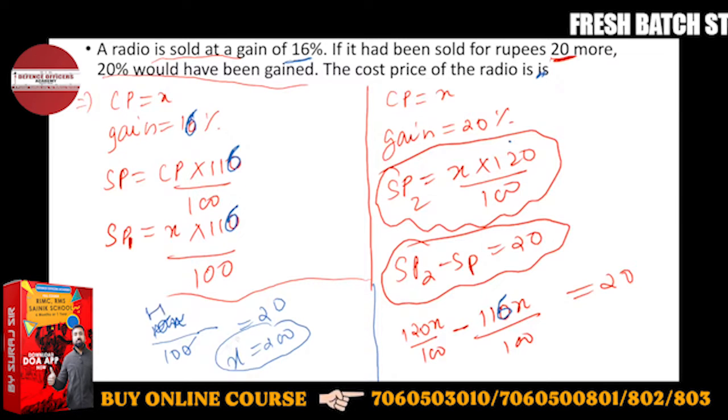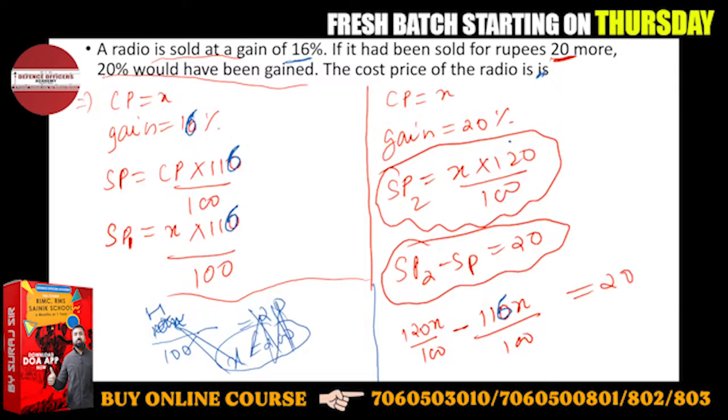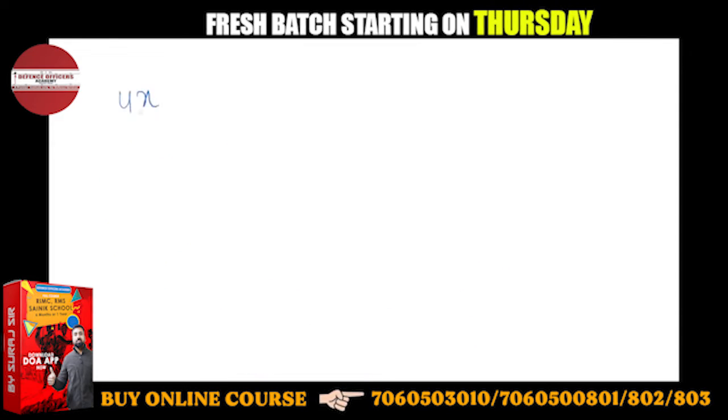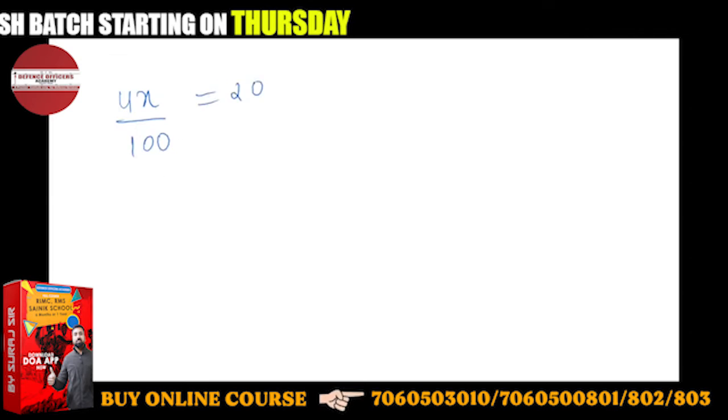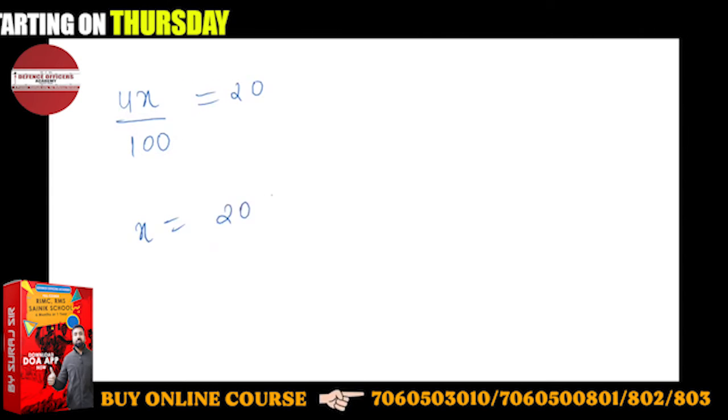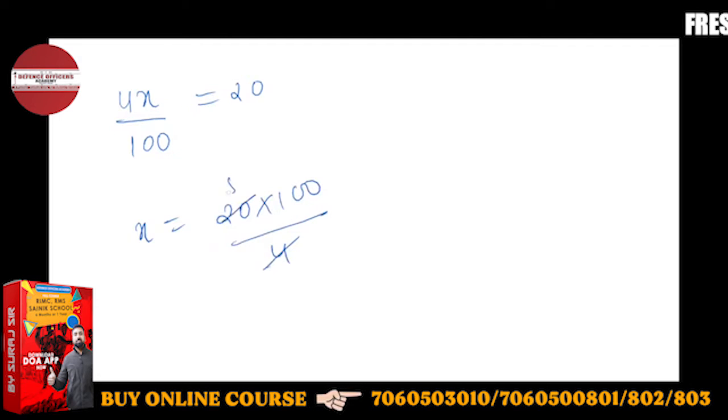Let's do it on the next page. So 4X upon 100 equals 20. So X will be 20 into 100 upon 4. 4 fives are 20, so X will be equal to 500 rupees.